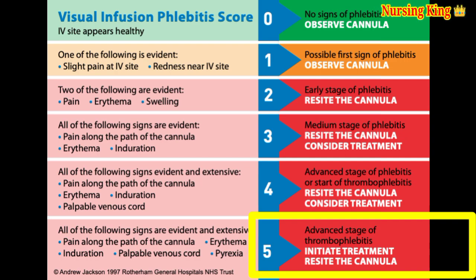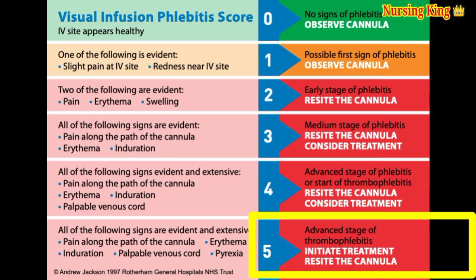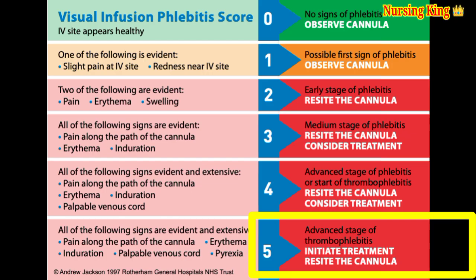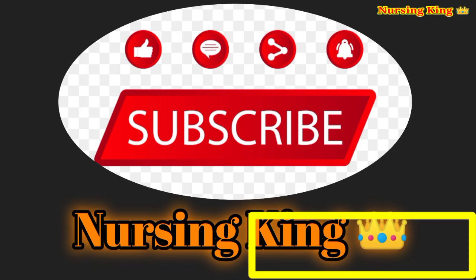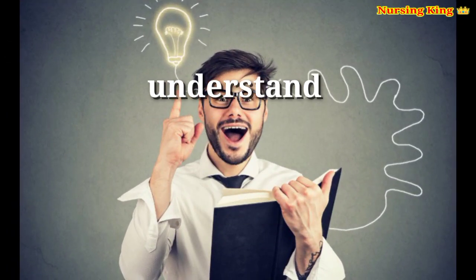Score 5 is the advanced stage of thrombophlebitis. At this stage, initial treatment is needed for the IV complication. Signs include pain along the cannulation site, erythema, fever, swelling, induration, and infiltration — everything is present.